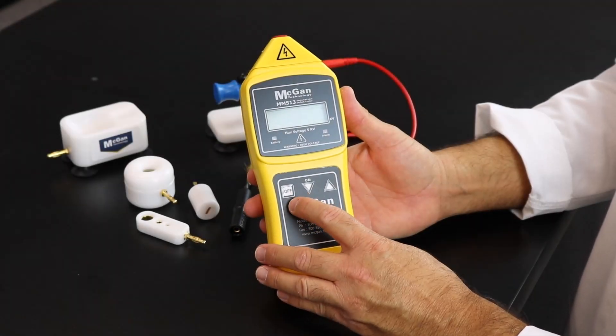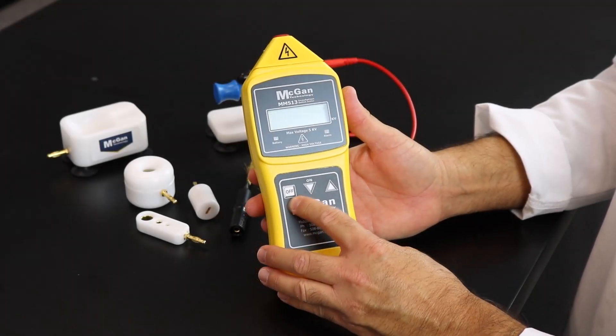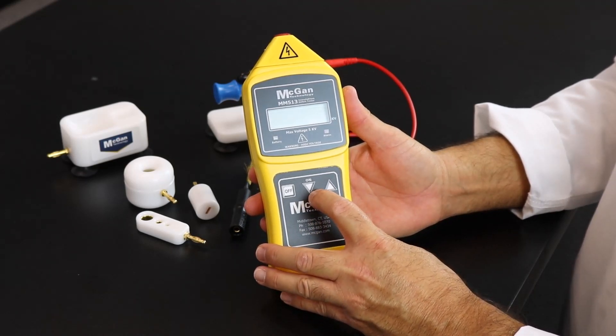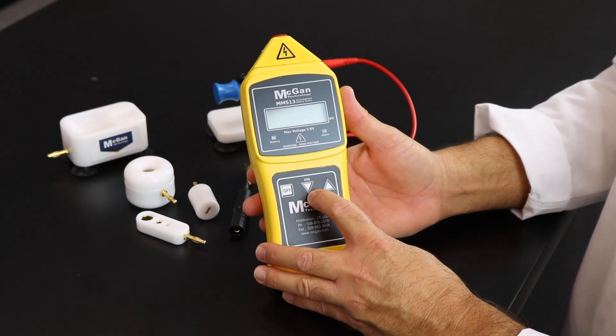On the front bottom of the unit, you're going to see an off button, an on button, and then the up and down arrows to adjust the desired voltage dependent on the accessory being used.